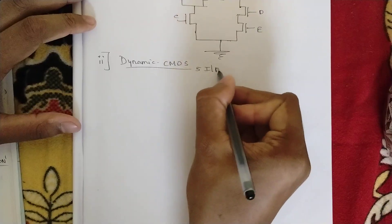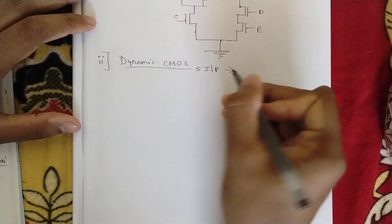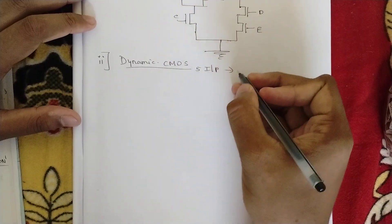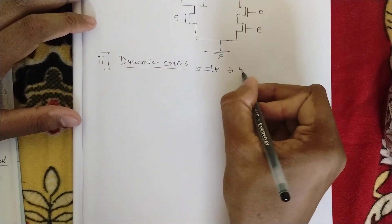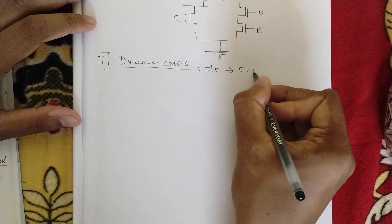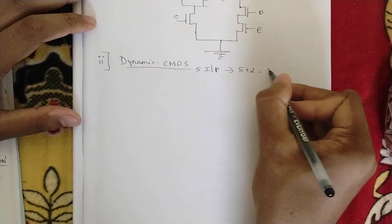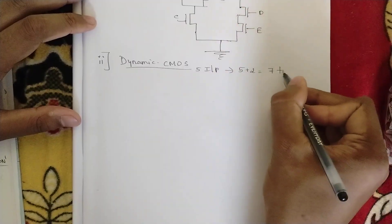Now the same expression let us draw using dynamic CMOS. For dynamic CMOS again 5 inputs, and we have studied that we are using n+2 transistors, that is 5+2 = 7 transistors.